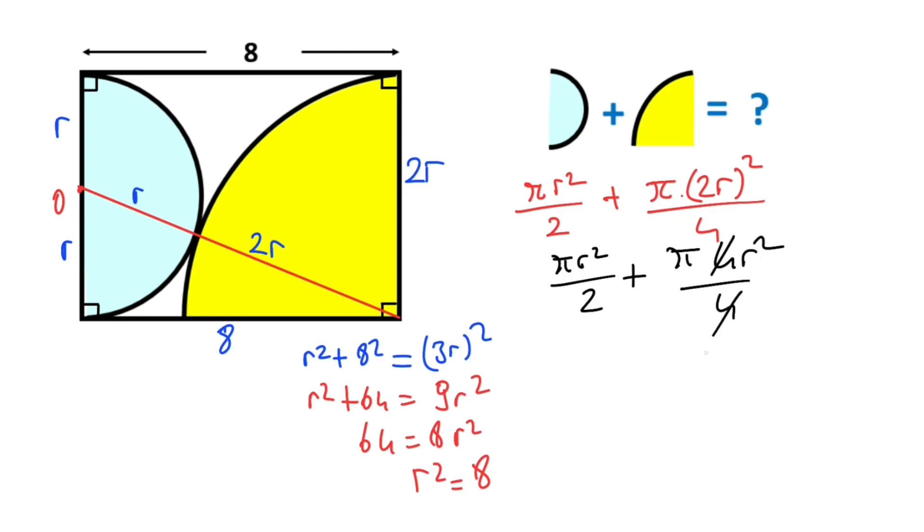This means the sum of the shaded areas equals 3πr²/2. Now if we plug in r² = 8 into the formula, we get 3π/2 × 8, which simplifies to 12π. Thanks for watching!